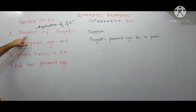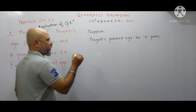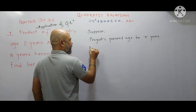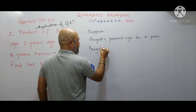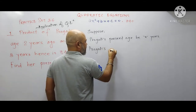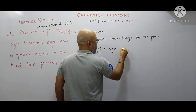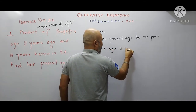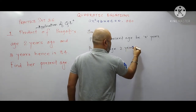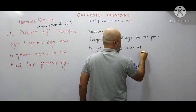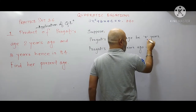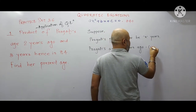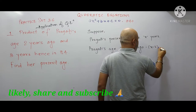What is given: the product of Prakriti's age two years ago. So what will be Prakriti's age two years ago? Two years ago means today is x years, so two years ago she will be x minus 2 years.